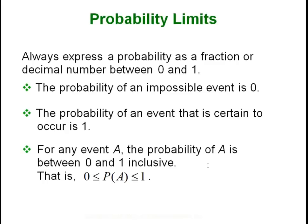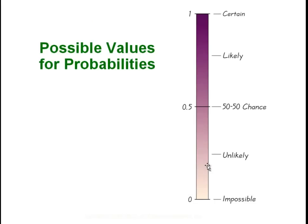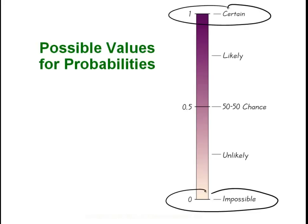Some basics of probability: probabilities can always be expressed as a fraction, a decimal, or a percentage. Normally they are displayed as decimals and are between zero and one inclusive. A probability of zero means something is impossible; a probability of one means something is guaranteed to occur. Everything else is somewhere in between — impossible, unlikely, 50-50, likely — and a probability of one is something certain, like death and taxes.